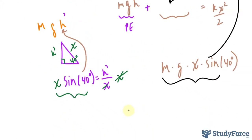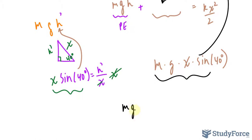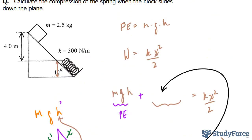Let me rewrite that so you can see it clearly. We have mgh, which represents the potential energy from the top to 4 meters, plus mgx sine 40 is equal to kx squared over 2. All we have to do now is fill this in.